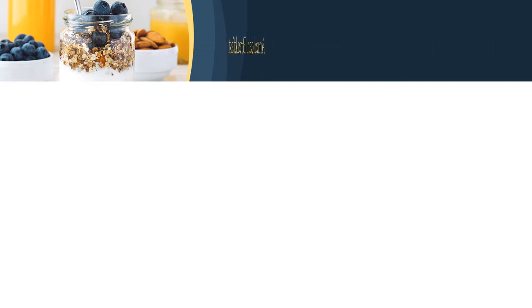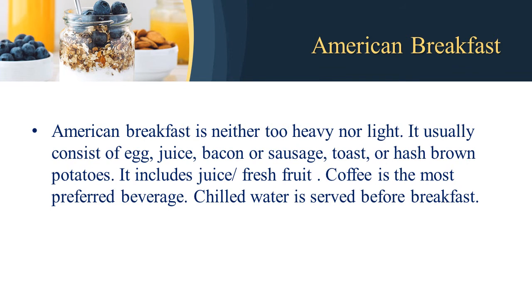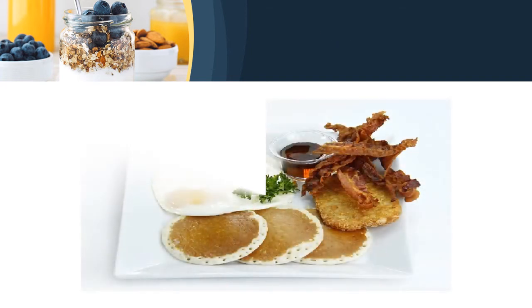The next one is American breakfast. American breakfast is neither too heavy nor too light. It usually consists of eggs, juice, bacon or sausage, toast, or hash brown potatoes. Fresh fruit juice is included, coffee is the most preferred beverage, and chilled water is generally served before breakfast. In this picture you can see American breakfast, which is generally served with accompaniments and egg preparations.